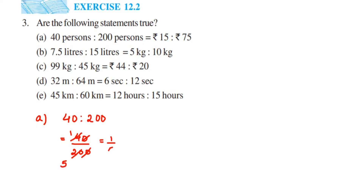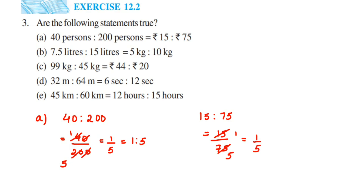Converting 1 by 5 back into a ratio gives 1 is to 5. The second ratio is ₹15 is to ₹75 — writing this as a fraction: 15 by 75. Cancelling directly using the 15 table: 15 ones are 15, 15 fives are 75, so the fraction is 1 by 5, which is the ratio 1 is to 5. We got 1 is to 5 and 1 is to 5 — they are equal, so yes, the first statement is TRUE.